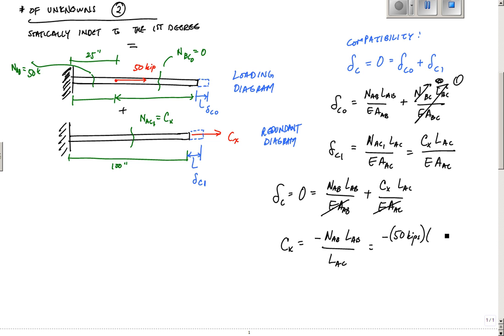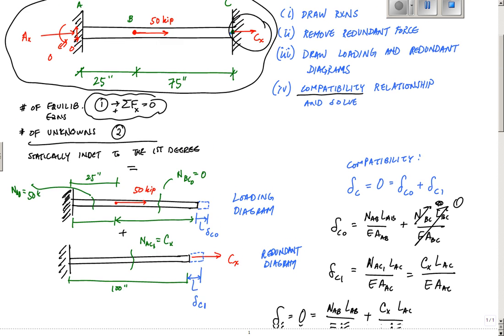Negative 50 kips times that LAB, which was 25 inches, divided by LAC, which is 100 inches, and that tells me that CX is equal to minus 12.5 kips. The negative tells me that CX is 12.5 kips pointing to the left. CX is 12.5 kips pointing to the left right here.